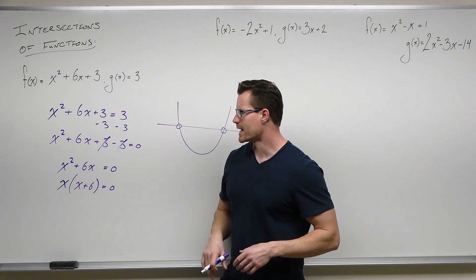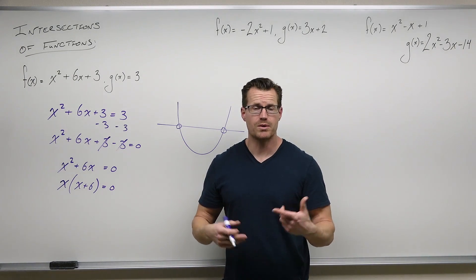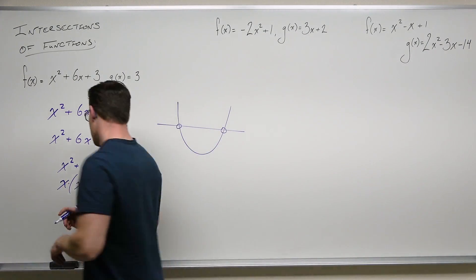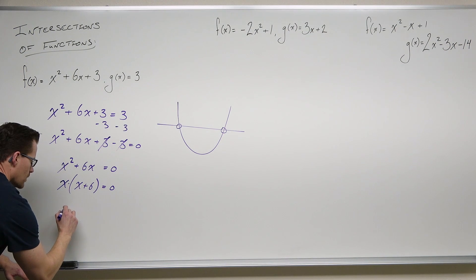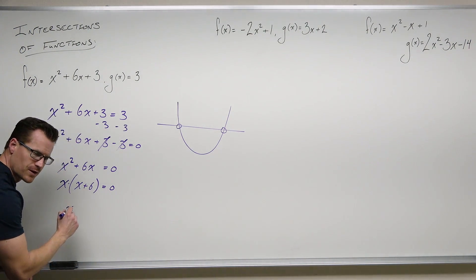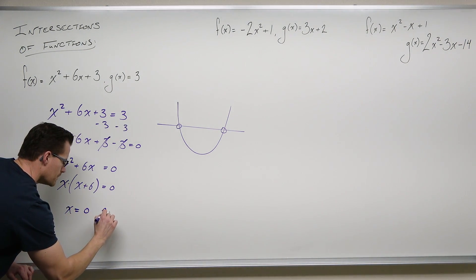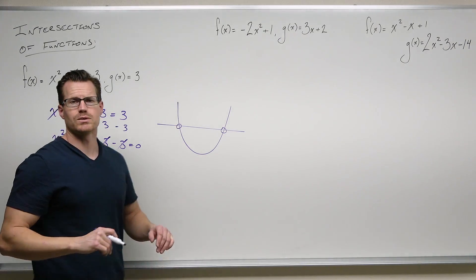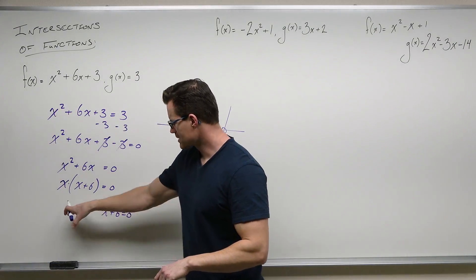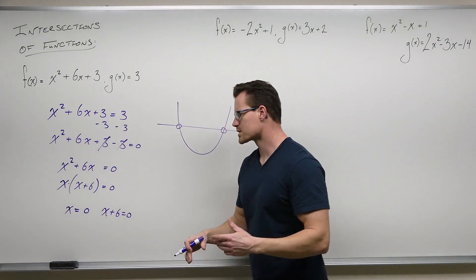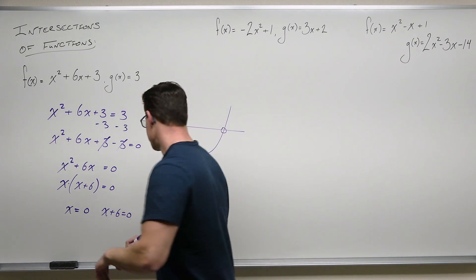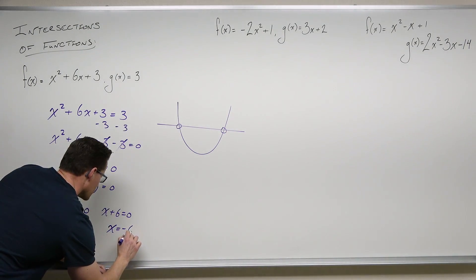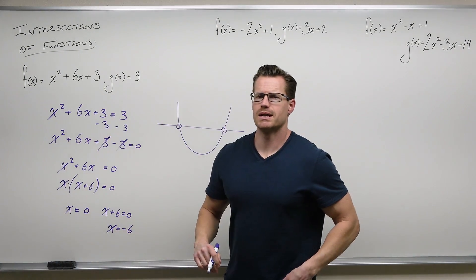And because we got everything on one side, we have a zero on the right-hand side, the zero product property works. It says we got a couple factors — set each one equal to zero. Every factor that has a variable gets set equal to zero, and we get two solutions: x equals zero, and if we subtract six, we get x equals negative six.